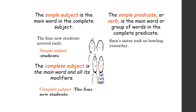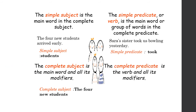The simple predicate or verb is the main word or group of words in the complete predicate — just as a subject can be simple and complete, so can the predicate. For example, 'Sarah's sister took us bowling yesterday' — the complete predicate is 'took us bowling yesterday,' and the simple predicate, always the verb, is 'took.' The complete predicate is the verb and all of its modifiers: adverbs, adjectival phrases, or prepositional phrases.